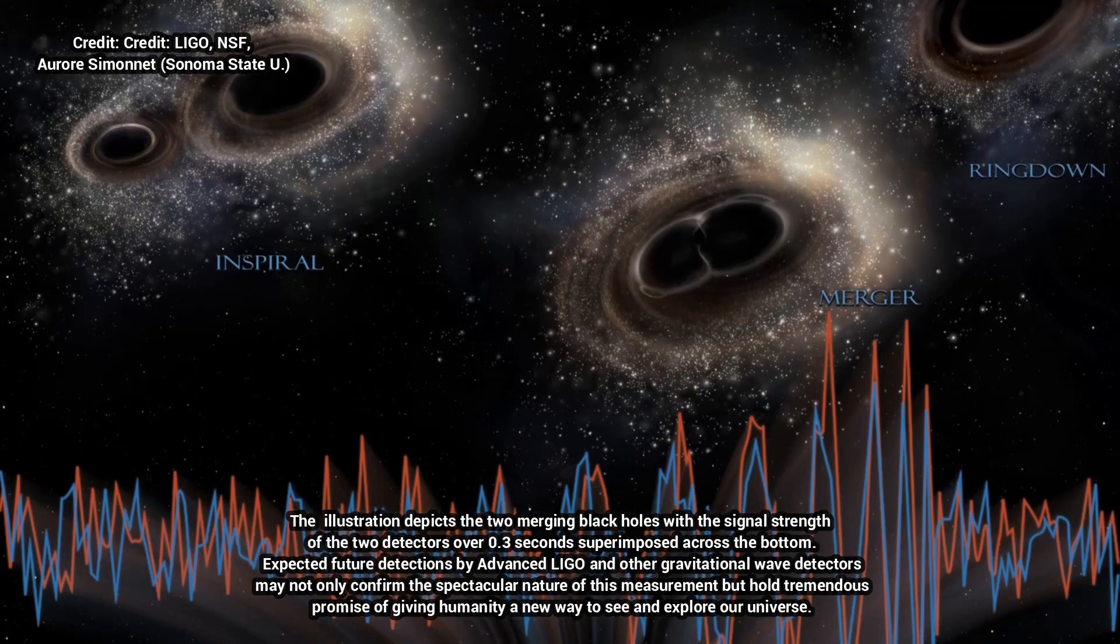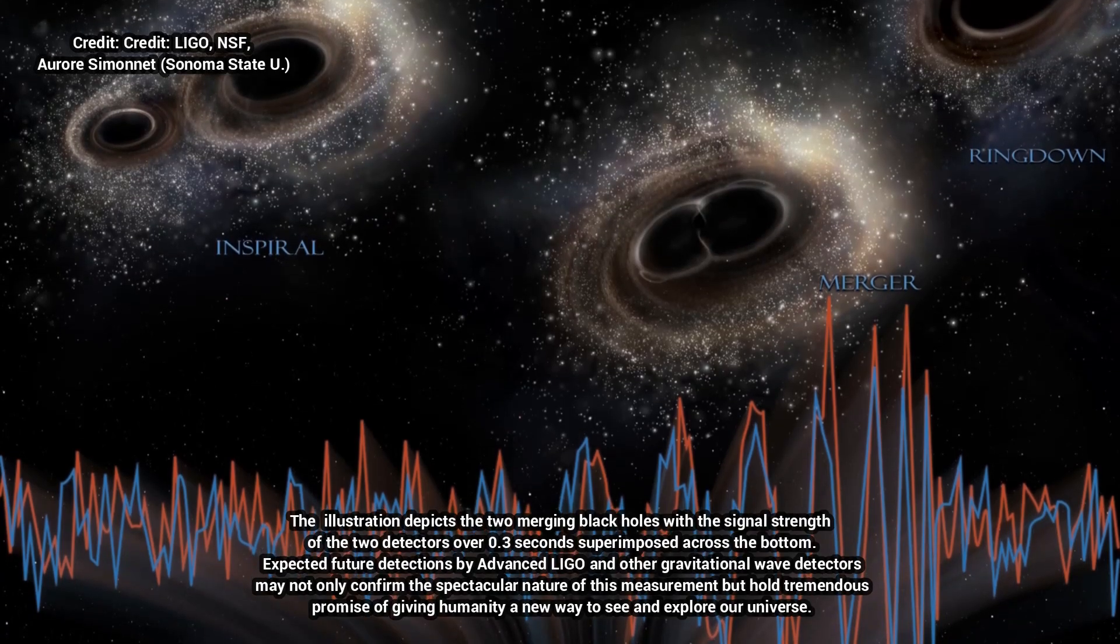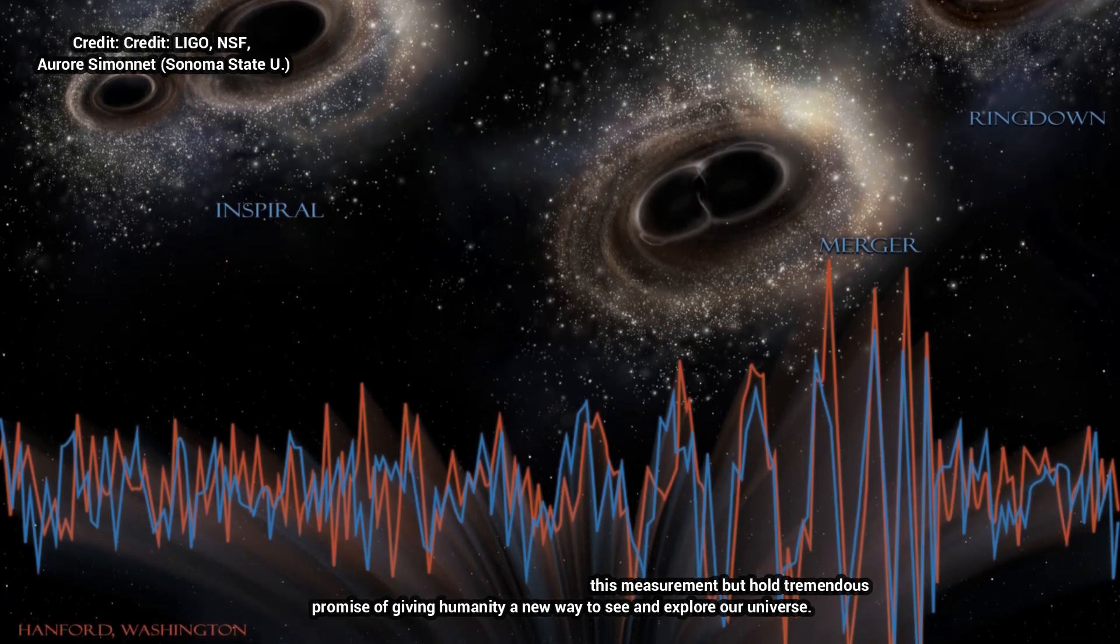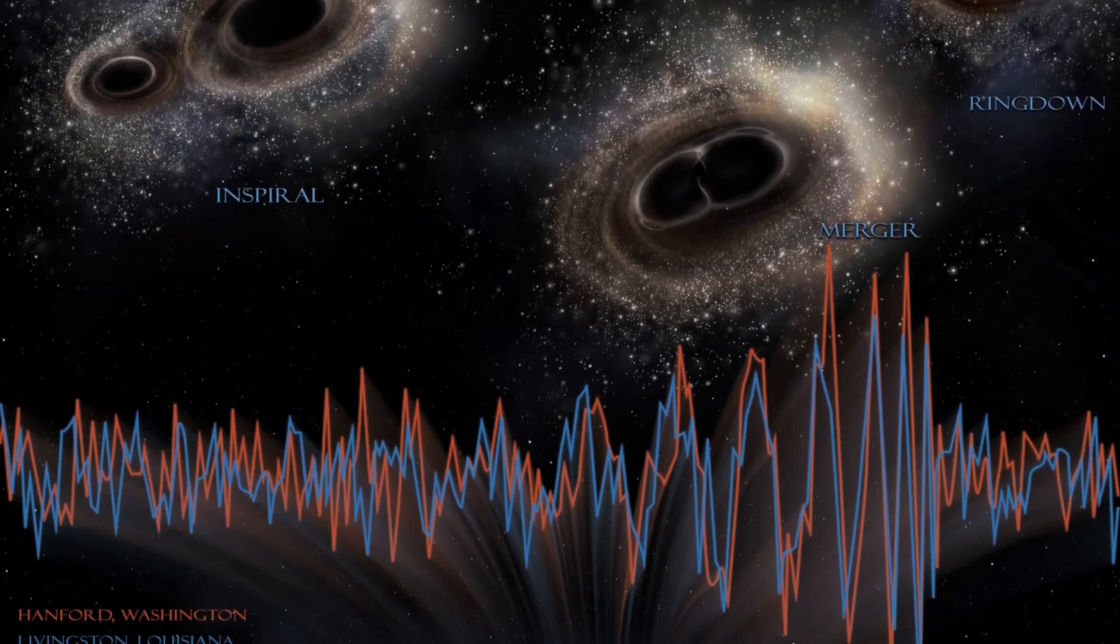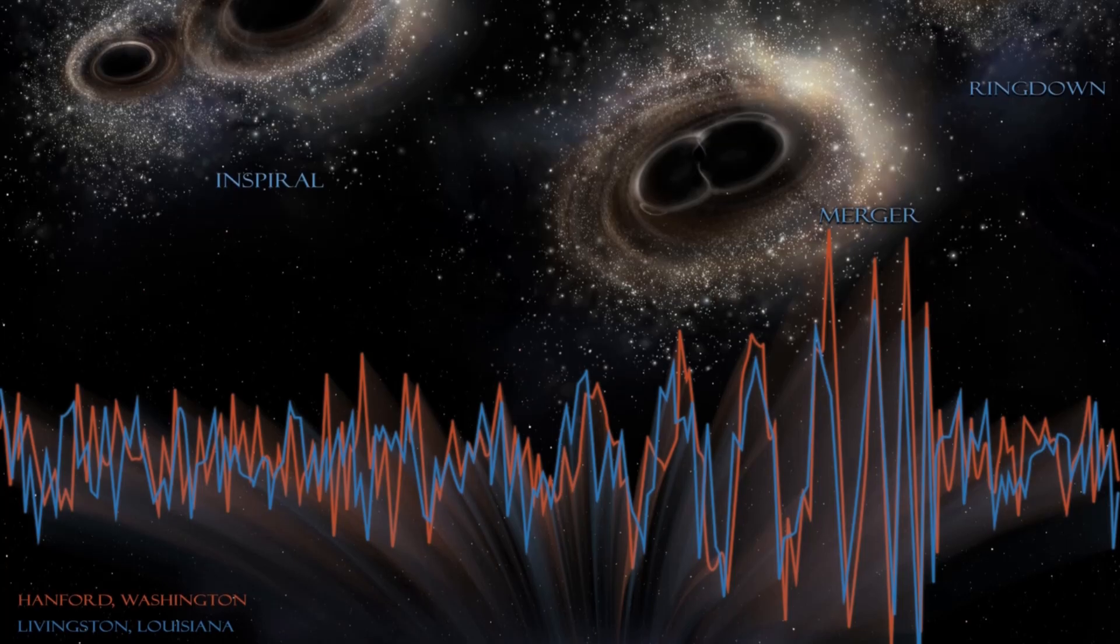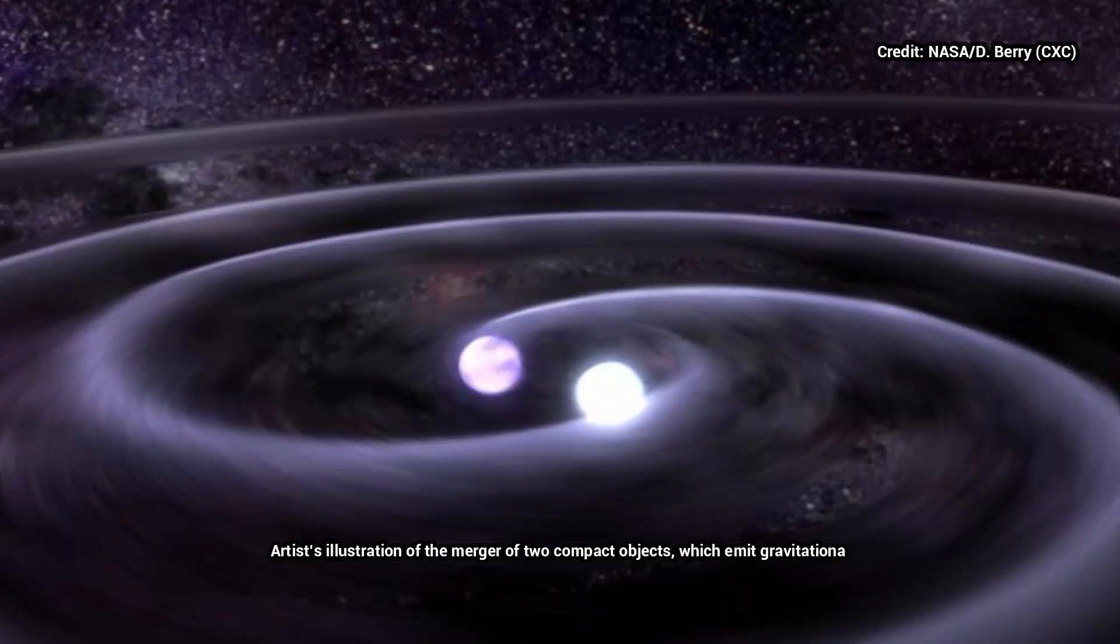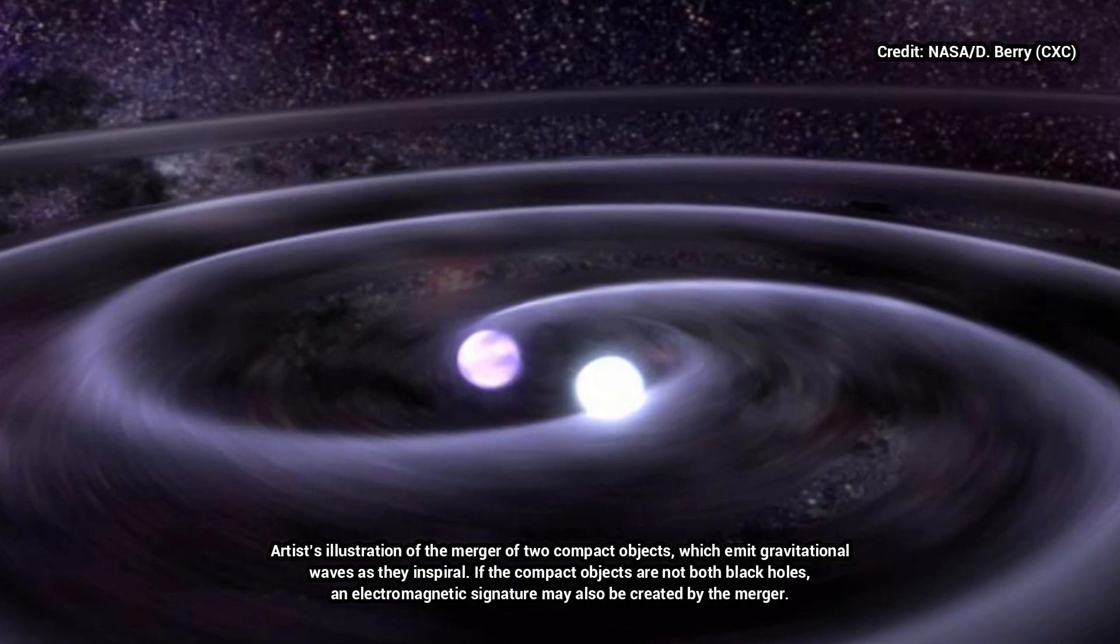He specifically looked at simulations of LIGO's first detection of gravitational waves from a black hole merger event known as GW150914. During the end phase of the merger, a period of time known as the ring-down, the newly merged black hole is still shaking.